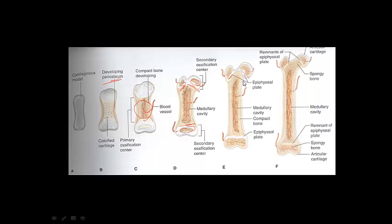As the child gets older and their bones grow, the growth plates — made of cartilage — have cells putting down more cartilage, and then osteoblasts come in and put in more bone. So it cycles: more cartilage, more bone, more cartilage, more bone, and the bones get longer.